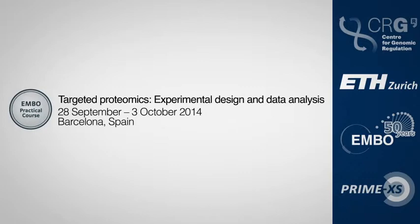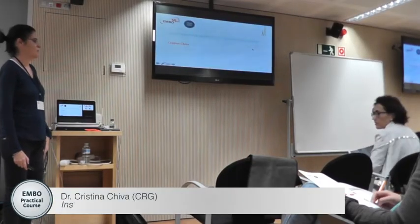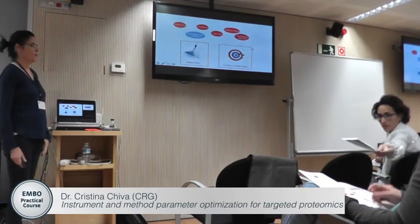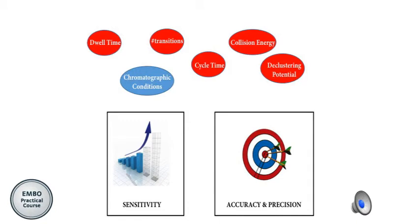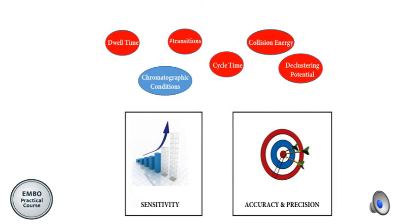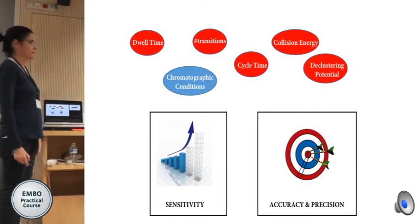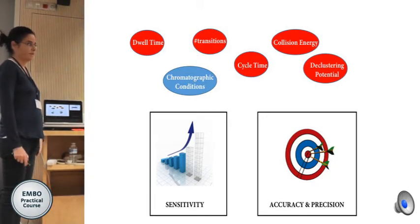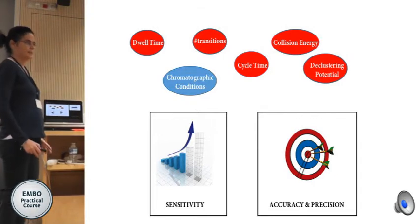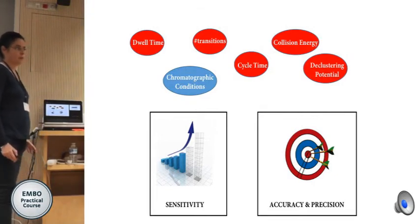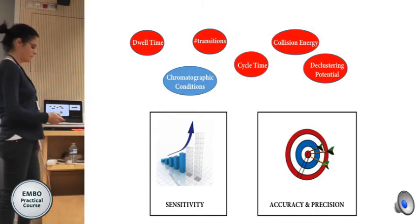This talk is about instrument and method parameter optimization. When you do an SRM experiment, what you want to gain is sensitivity and also accuracy and precision. For doing that you need to take into account several parameters — some are related to the instrument and the other important part of the experiment is also the LC system in front of the instrument, which is also very important in this type of experiment.